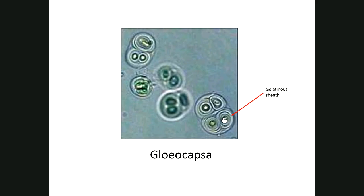Hello, so here I have a picture of Gloeocapsa. Gloeocapsa is a cyanobacterial cell, which is, of course, a photosynthetic bacteria.